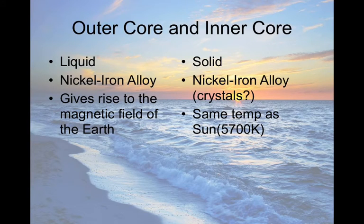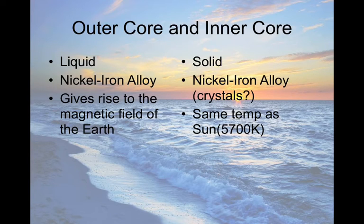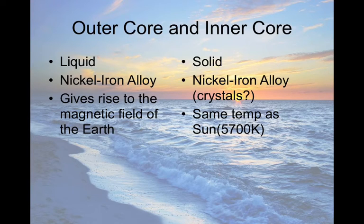The outer core and inner core differ mainly in physical state, which is why they're separate in the physical model. The outer core is liquid; the inner core is solid. Both are composed of a similar nickel-iron alloy. There's a current theory that the solid inner core is actually one large crystal, which works mathematically when dealing with magnetism. The outer core, being a spinning hot metal, gives rise to Earth's magnetic field. The inner core is at approximately the same temperature as the surface of the sun.